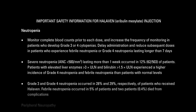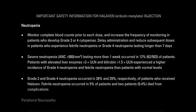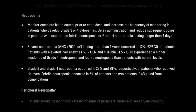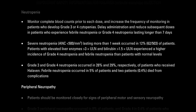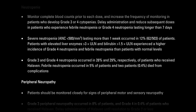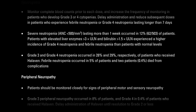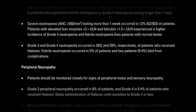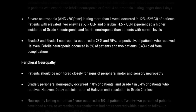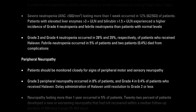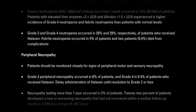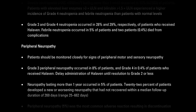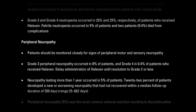In 12% of patients — 62 out of 503 — severe neutropenia, defined as an absolute neutrophil count less than 500 per cubic millimeter, lasted more than one week. Patients with elevated liver enzymes greater than 3 times the upper limit of normal, and bilirubin greater than 1.5 times the upper limit of normal, experienced a higher incidence of grade 4 neutropenia and febrile neutropenia than patients with normal levels. Grade 3 and grade 4 neutropenia occurred in 28% and 29% of patients who received Halaven. Febrile neutropenia occurred in 5% of patients, and 2 patients (0.4%) died from complications.